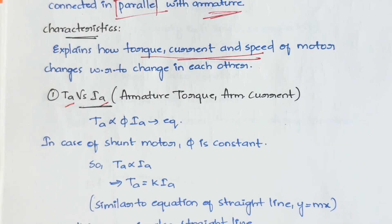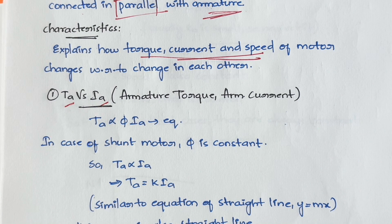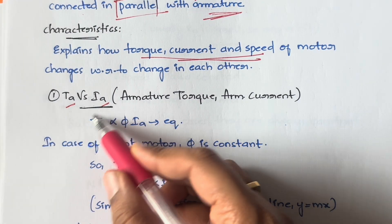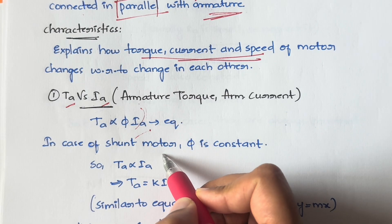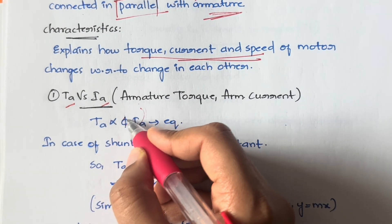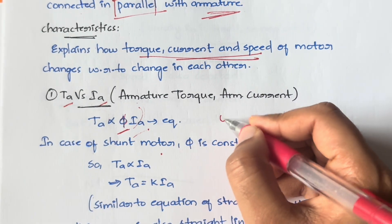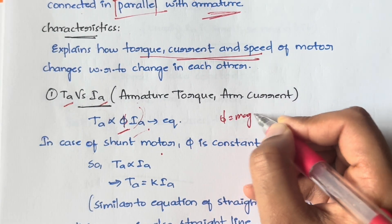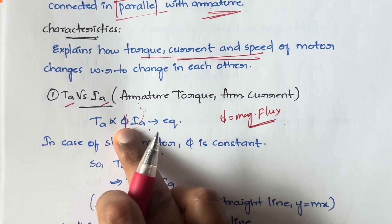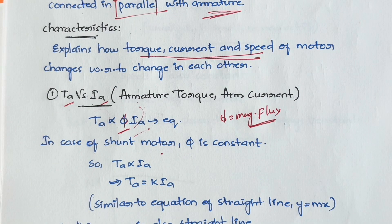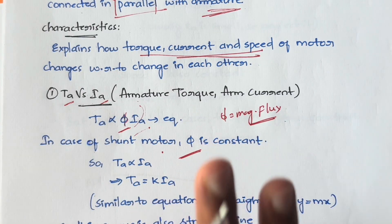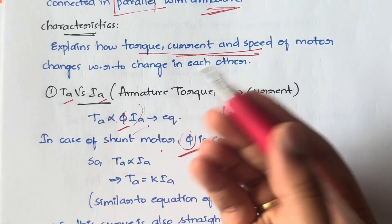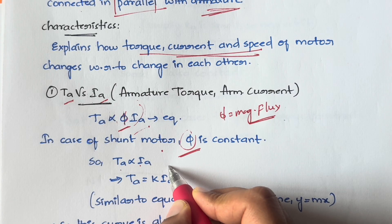Armature torque is directly proportional to armature current. In the case of a shunt motor, armature torque is directly proportional to φ times Ia, where φ is the magnetic flux. So armature torque is directly proportional to both flux and current. In the case of a shunt motor, magnetic flux is always constant, so you can remove it and say Ta is directly proportional to Ia.